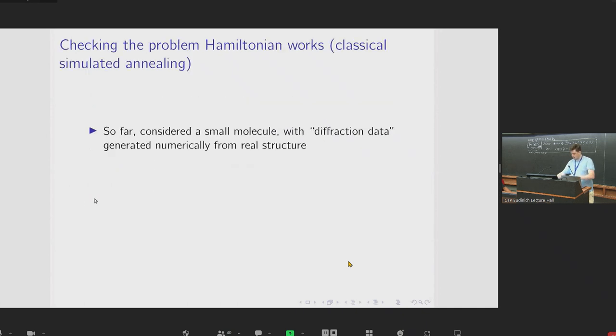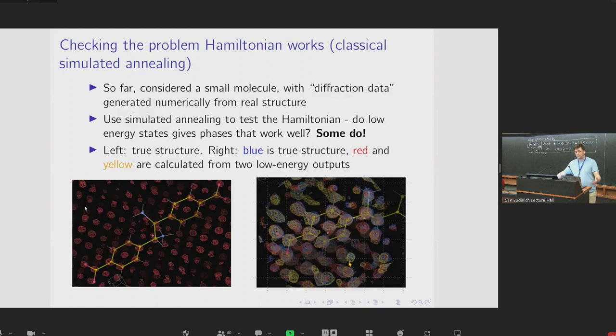So on to checking whether the problem Hamiltonian works. So far, we've considered a small molecule with some fake diffraction data generated numerically from the real structure. And then we've used classical simulated annealing to test the Hamiltonian. To answer the question, do low energy states work well in terms of giving phases that translate into sensible structures? Fortunately, it turns out that some of the low energy states do.